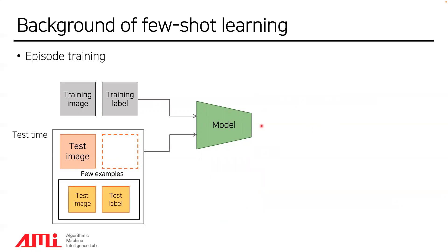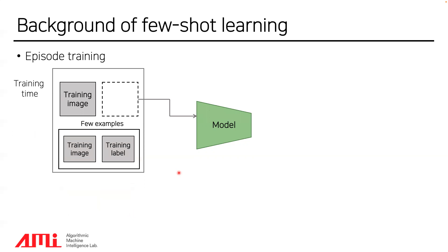The main purpose of few-shot learning is to predict the unseen test label. To achieve this, we can utilize the given few-shot test label dataset as well. Many prior works solve this problem by simulating the test time scenario during training time, where only a few labeled examples are available. This figure shows the simulated scenario in training time. By mimicking the test time scenario at training time, many few-shot learning methods demonstrate their efficiency.